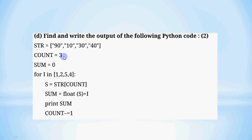Next, count is 3 and sum is 0 — just values stored here. Now we go to the for loop: `for i in [1, 2, 5, 4]`. This loop runs 4 times because there are 4 values in the list. Each iteration, i takes the next value: 1, then 2, then 5, then 4.